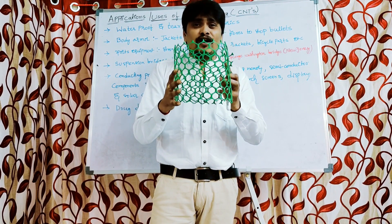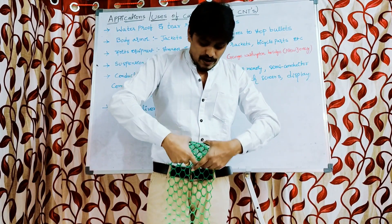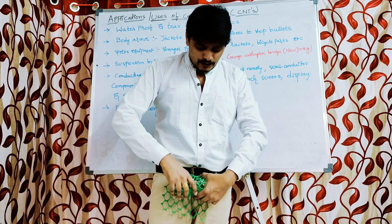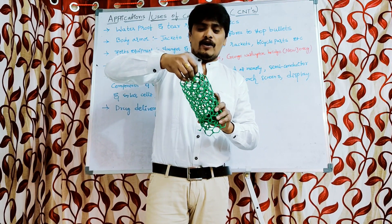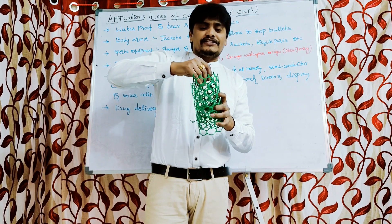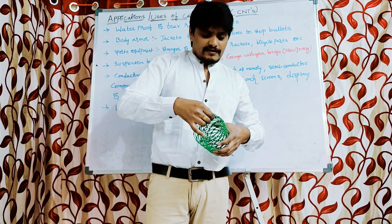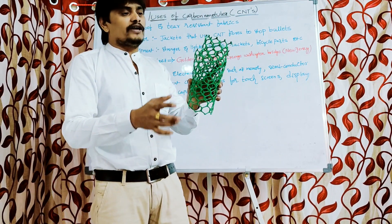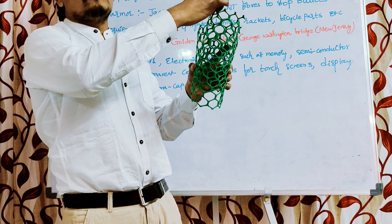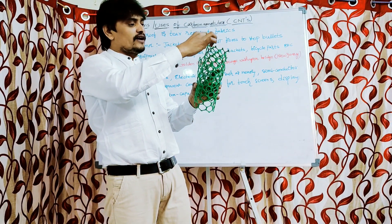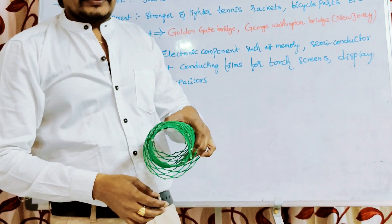This gives us a single-walled carbon nanotube. To get a multi-walled carbon nanotube, we combine many single-walled carbon nanotubes — that is, multiple rolled graphene sheets. So the multi-walled carbon nanotube contains multiple graphene sheet layers: the first, second, and third graphene sheets and so on.